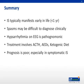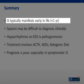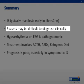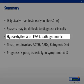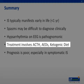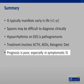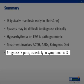In summary, infantile spasms typically manifest early in life at less than one year of age. Spasms may be difficult to diagnose clinically due to a wide spectrum of spasm appearances and confounding diseases within the differential diagnosis. Hypsarrhythmia on EEG is pathognomonic, and a workup for an underlying cause must include structural, infectious, genetic, and metabolic causes. Treatment involves ACTH, AEDs such as Topamax and Vigabatrin, and the ketogenic diet. Prognosis is poor, especially in symptomatic infantile spasms.